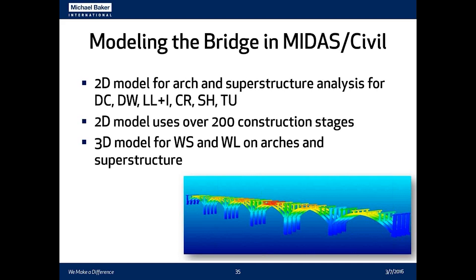Those are the highlights of the final design of the arch ribs. To perform the final design, we modeled the bridge using MIDAS Civil software — one of our first projects using MIDAS Civil. We used a 2D model for arch and superstructure for dead loads, live load plus impact, creep, shrinkage, post-tensioning effects, and thermal effects. Our 2D model used over 200 construction stages. We used a 3D model for wind load effects on the arches and superstructure, since that involved transverse 3D behavior.